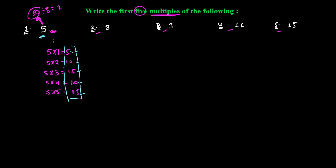Without any remainder means remainder is zero. If you divide 5 by 5 you get 1; if you divide 10 by 5 you get 2 — no remainder. Those numbers to which you divide by 5 and get no remainder are: 5, 10, 15, 20, and 25. So the first five multiples of 5 are these. Similarly, for the first five multiples of 8: